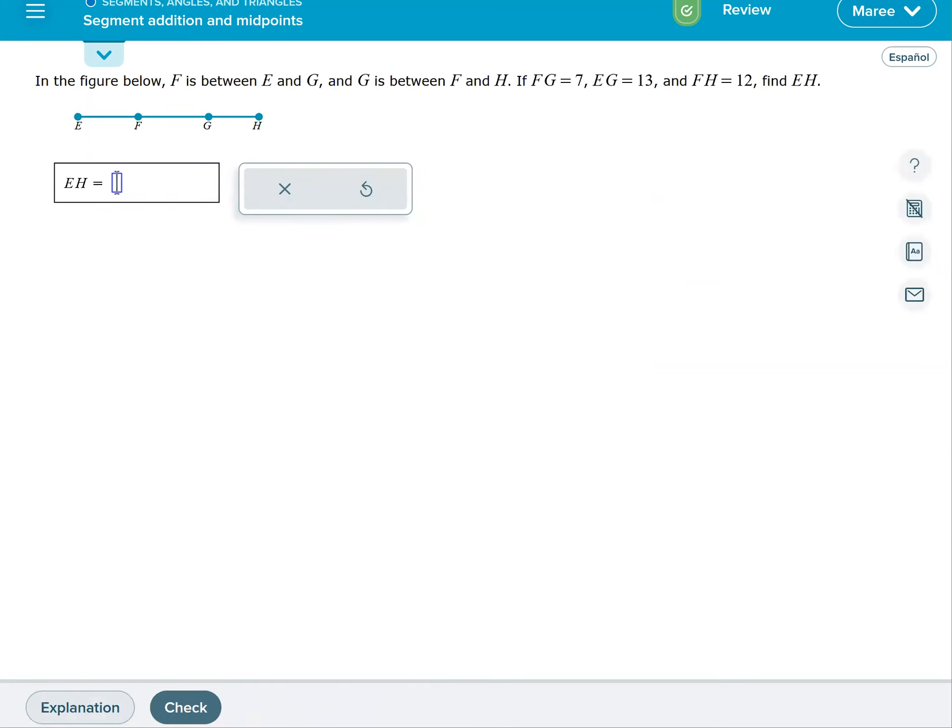So I like to redraw it, just kind of put my E, and then we have F and we have kind of a G over here somewhere and an H. F is between E and G, G is between F and H. If FG is seven, so from here to here is seven.